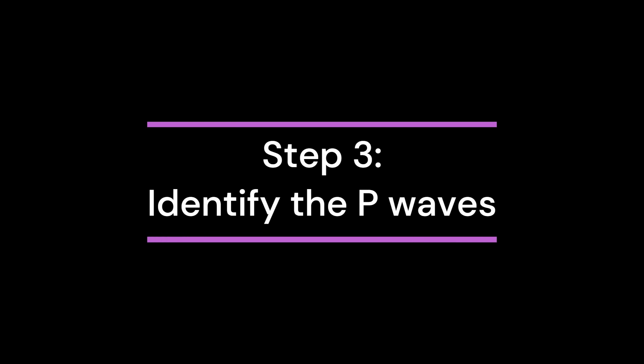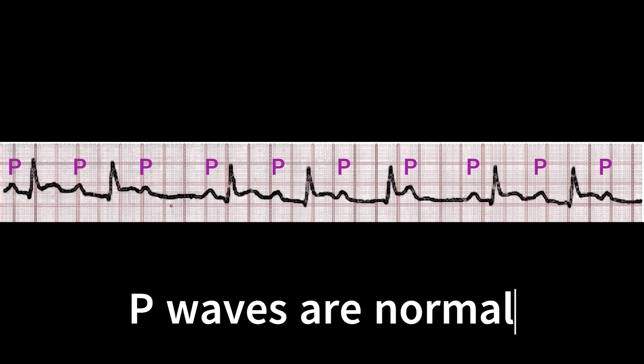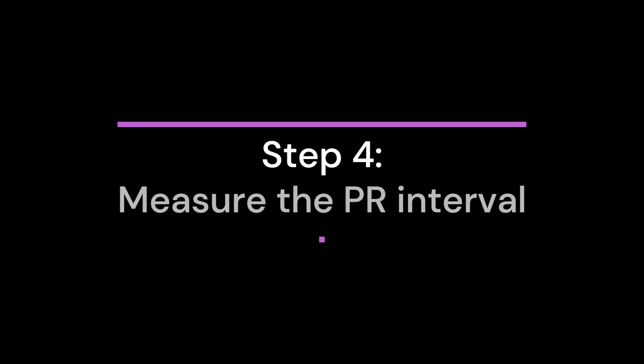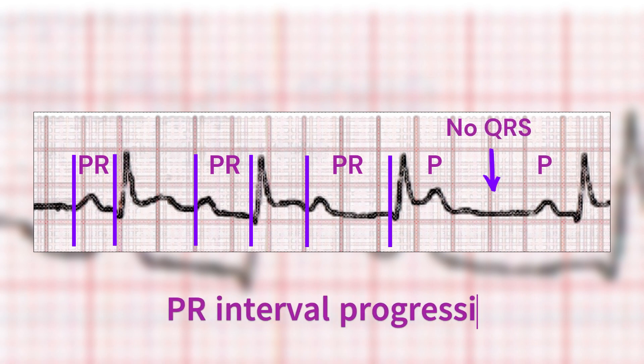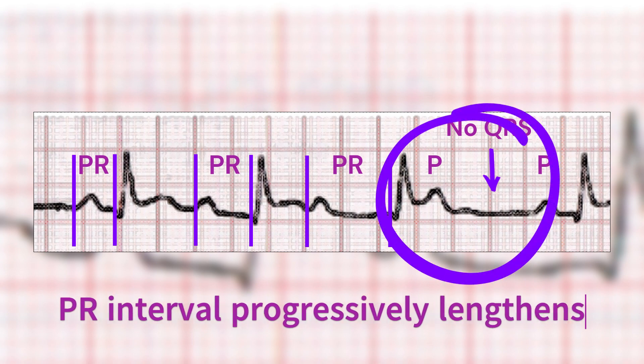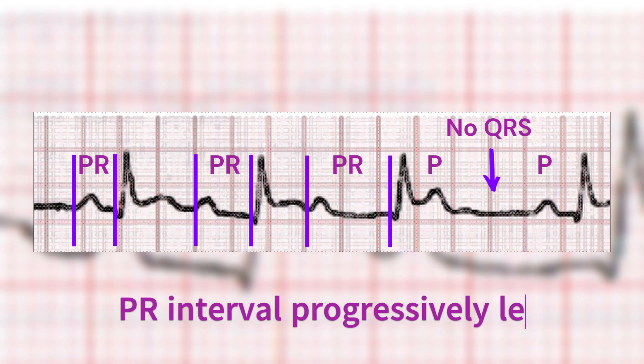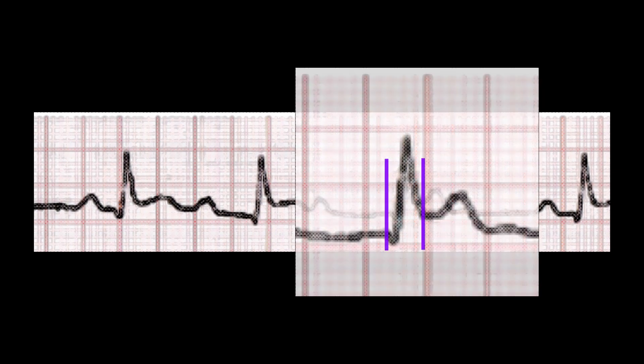Step 3: Identify and characterize the P waves. The P waves are all normal in morphology — upright and all have the same appearance. Step 4: Measure the PR interval. In Mobitz type 1 Wenckebach, the main hallmark is a PR interval that is progressively getting longer until a non-conducted heartbeat appears as a P wave not followed by a QRS complex. Step 5: Measure the QRS complex. The QRS complex duration is usually normal, measuring less than 0.12 seconds.